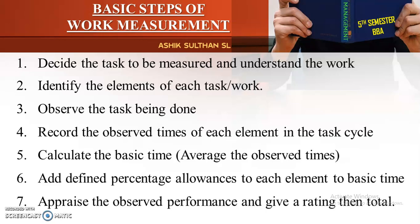The fourth step is to record the observed times of each element in the task cycle. We calculate the observed time of each element to get the basic time. In the basic time, we add the percentage of allowances. We then appraise the observed performance and give a rating — this involves adding the performance rating to the basic time.